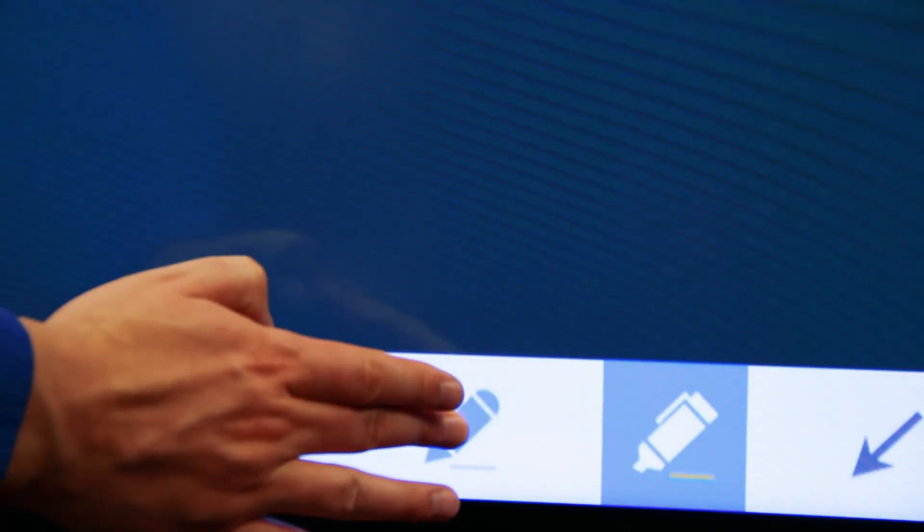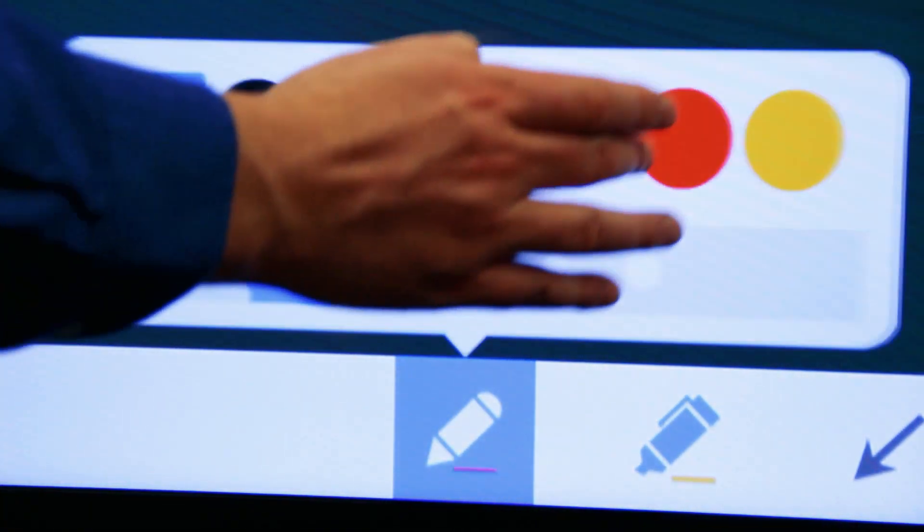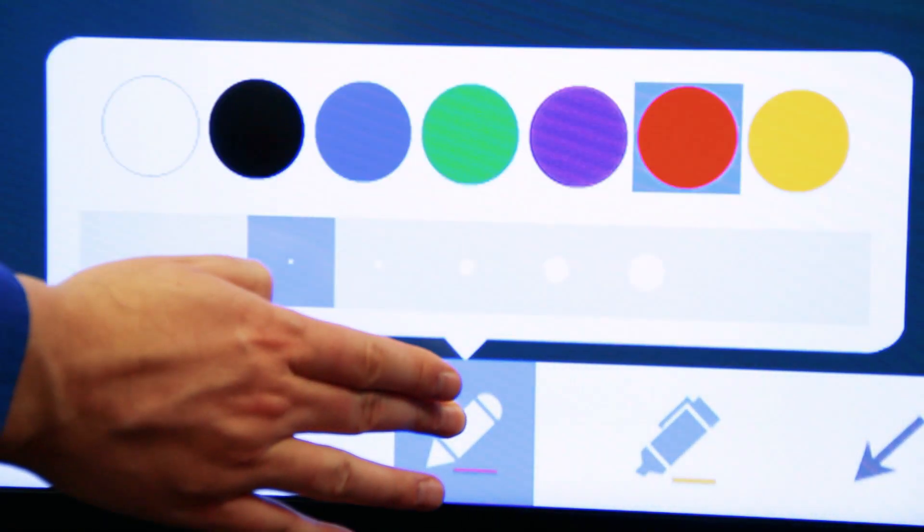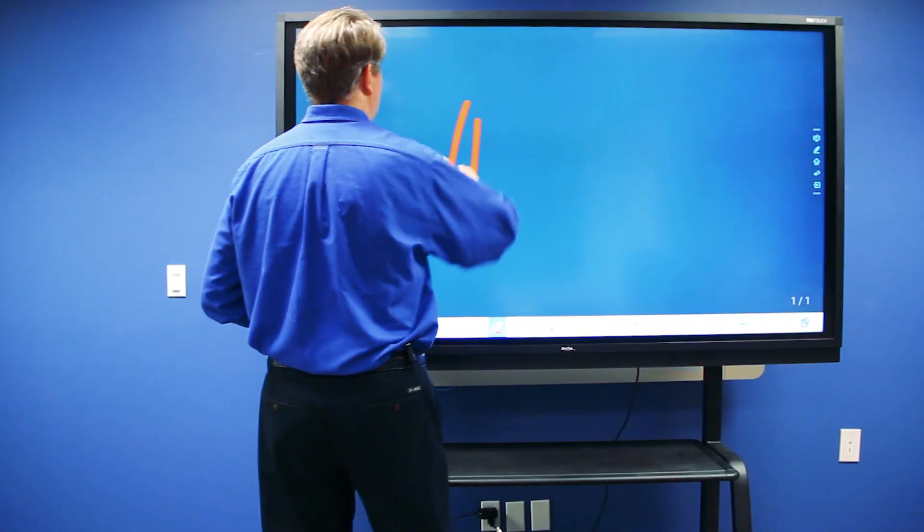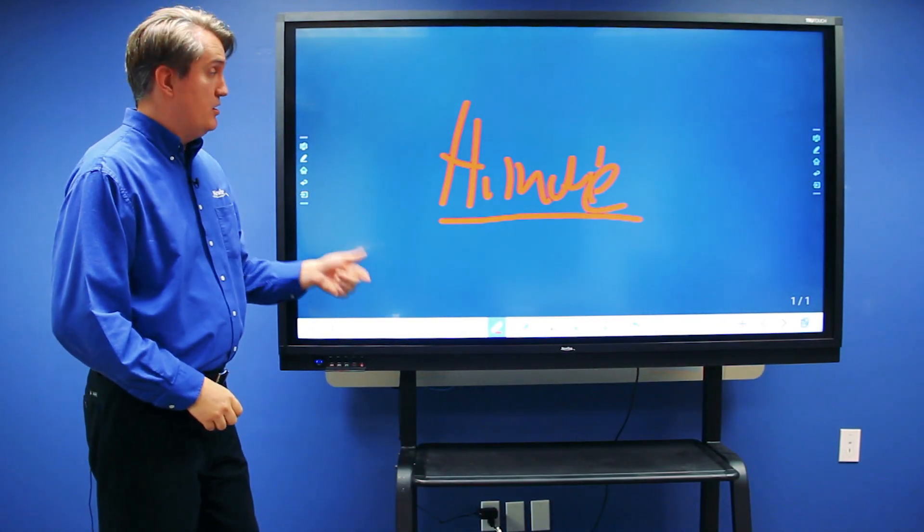Do a touch and hold on the writing utensil you wish to use. You can choose your color and your thickness. Once you've made your choice, you can begin annotating directly on the screen.